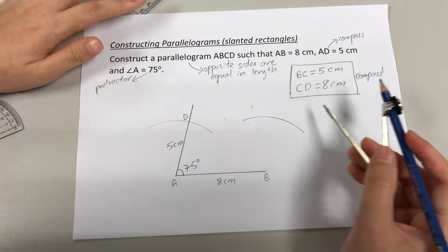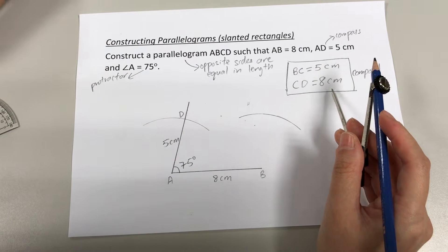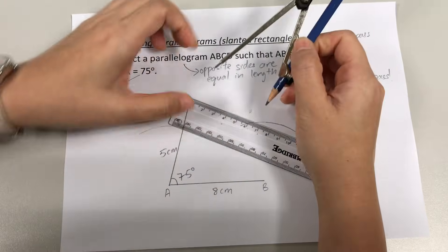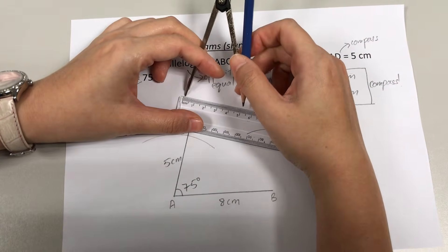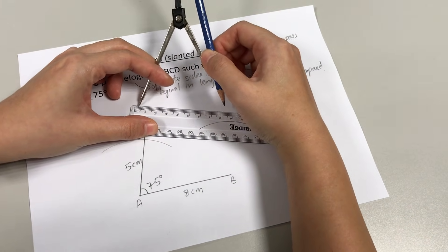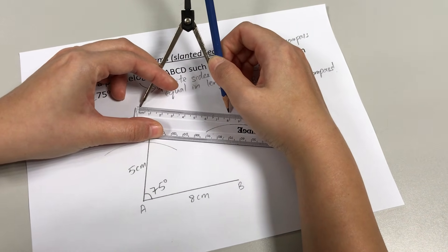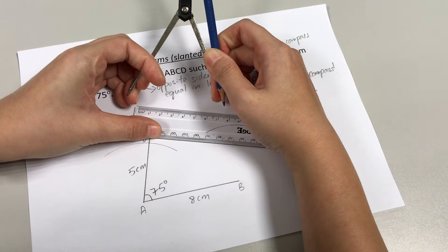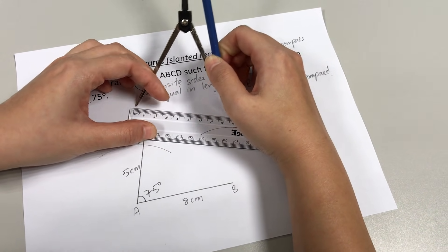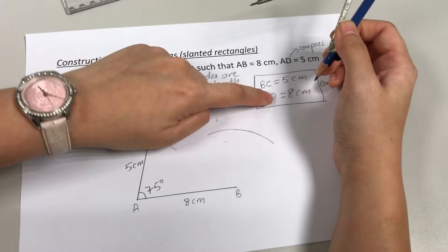Next, CD 8 cm, likewise is a length, so I am going to use a compass as well. Now I have to extend my compass to a length of 8 cm. It has to be wider. Slightly wider. 8 cm. So 8 cm to draw CD.